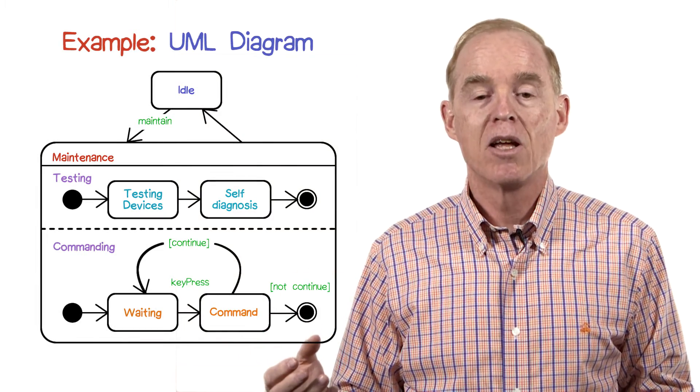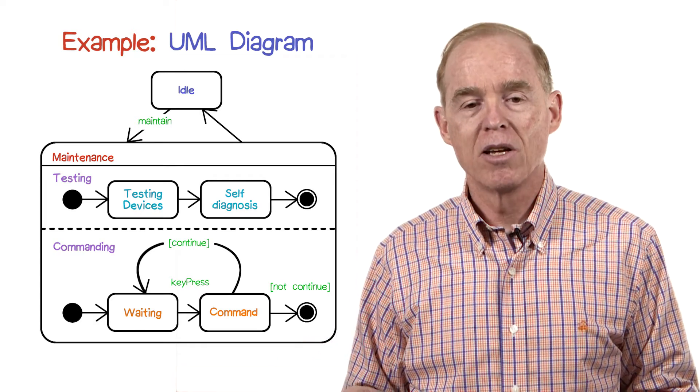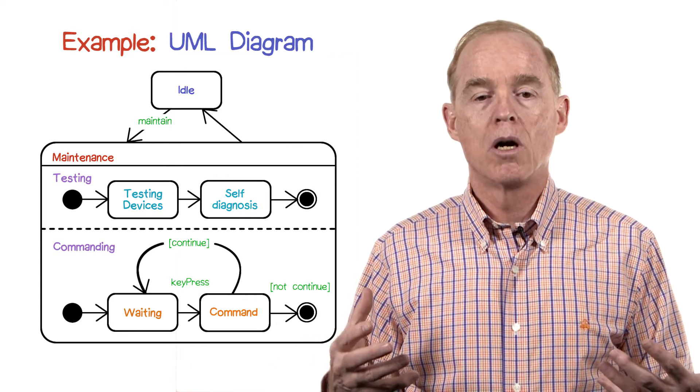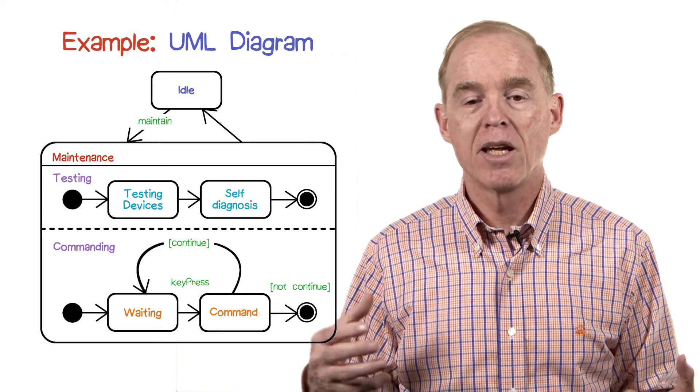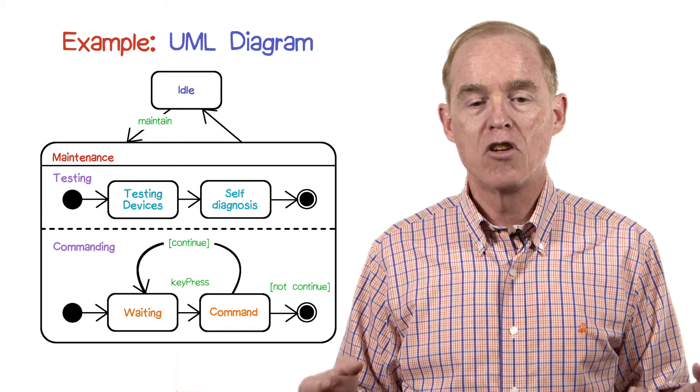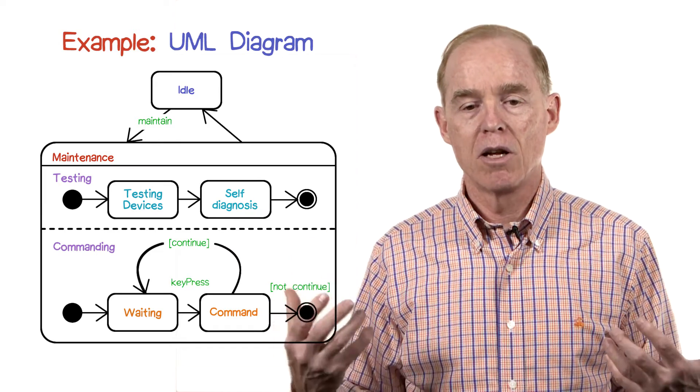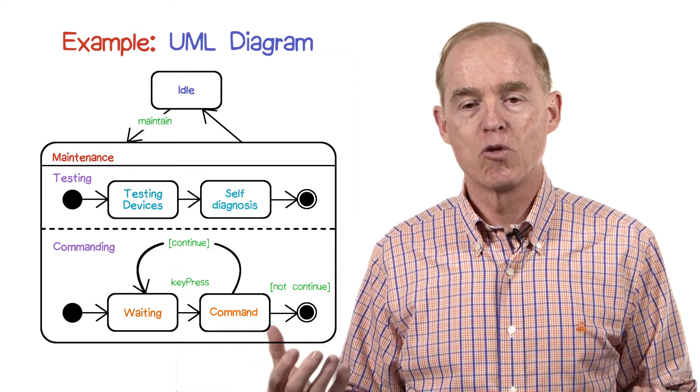The maintenance state has the dashed line. In this case, it's a horizontal line and two concurrently executing machines, one called testing and one called commanding, each of which are quite simple. Each has an initial state and a final state and some transitions between them.